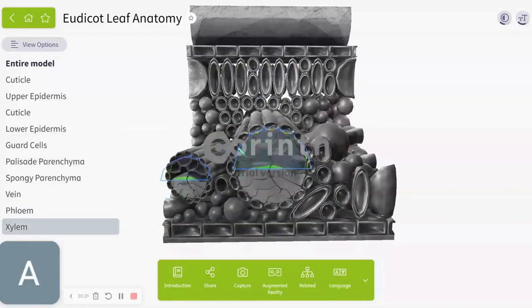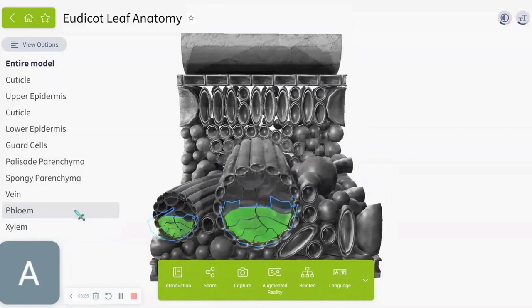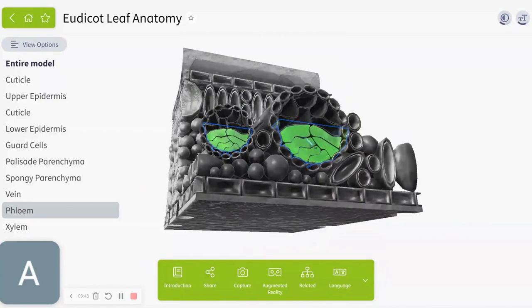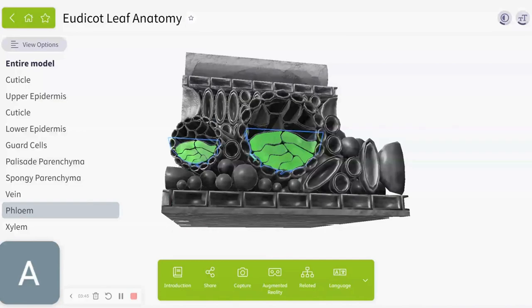This xylem does all the water delivery and the phloem. It's called phloem, not folium, phloem. The phloem does all the sugar delivery.